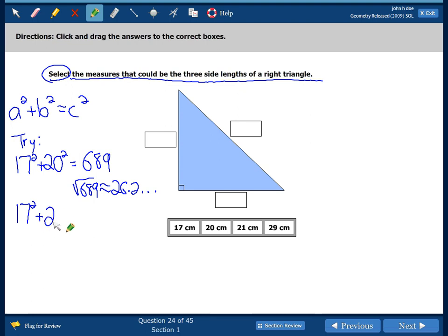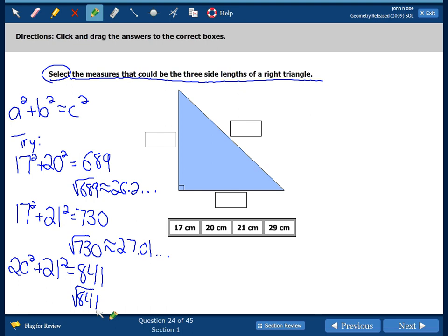Let's try 17 squared plus 21 squared. This gets us 730. The square root of 730 is 27.01 and it goes on forever. So it's not going to be 17 squared plus 21 squared. The last option we can try is 20 squared plus 21 squared, which is 841. The square root of 841 will get us 29. So that will be our three answers for 20, 21, and 29. Remember, the largest number has to go across. It has to go to the hypotenuse. So our answers could be 20, 21, and 29.